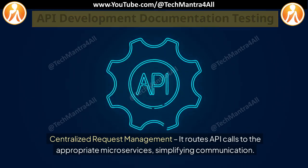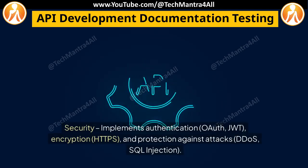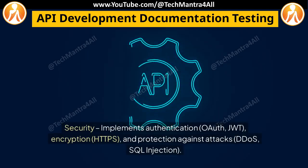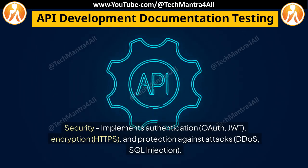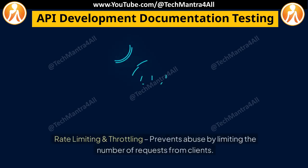Centralized request management routes API calls to the appropriate microservices, simplifying communication. Security: implements authentication — OAuth, JWT — encryption (HTTPS), and protection against attacks such as DDoS and SQL injection.